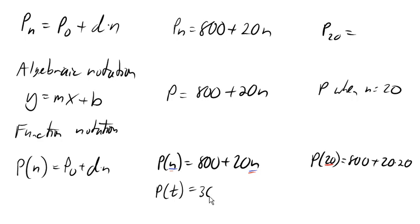That would tell us that, first off, T is my input variable, just like N was the input variable here. And P is, again, still the output or the population value.